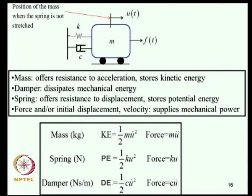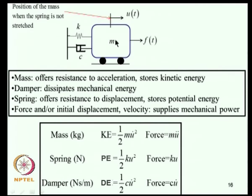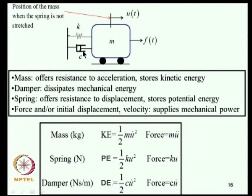We need four entities: a mass that resists acceleration and stores kinetic energy; a damper that dissipates mechanical energy; a spring that resists displacement and stores potential energy; and an external force or initial displacement/velocity. For energy dissipation, we adopt a simple viscous damping model - a hypothetical piston with viscous fluid - rather than addressing conversion of mechanical energy to heat from first principles.